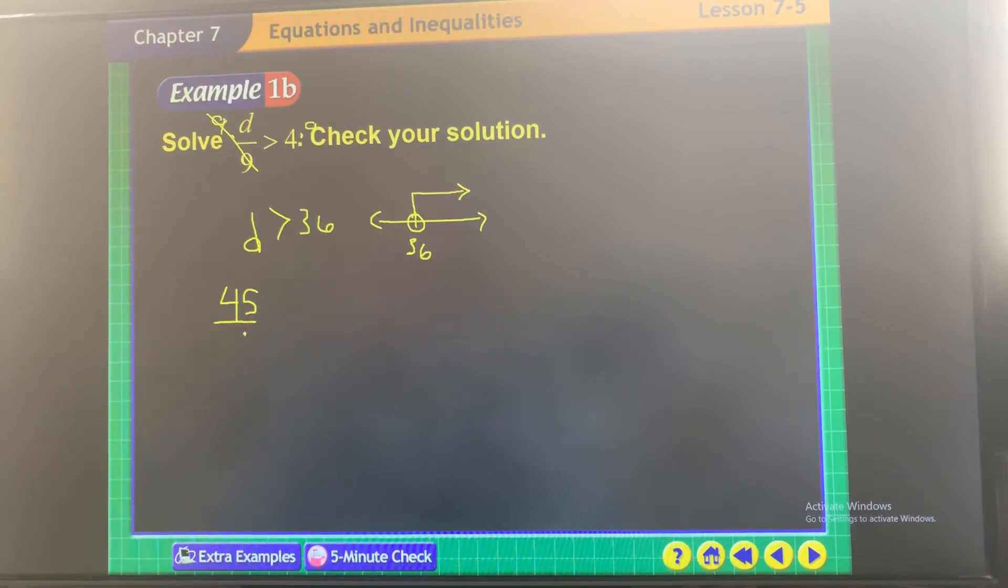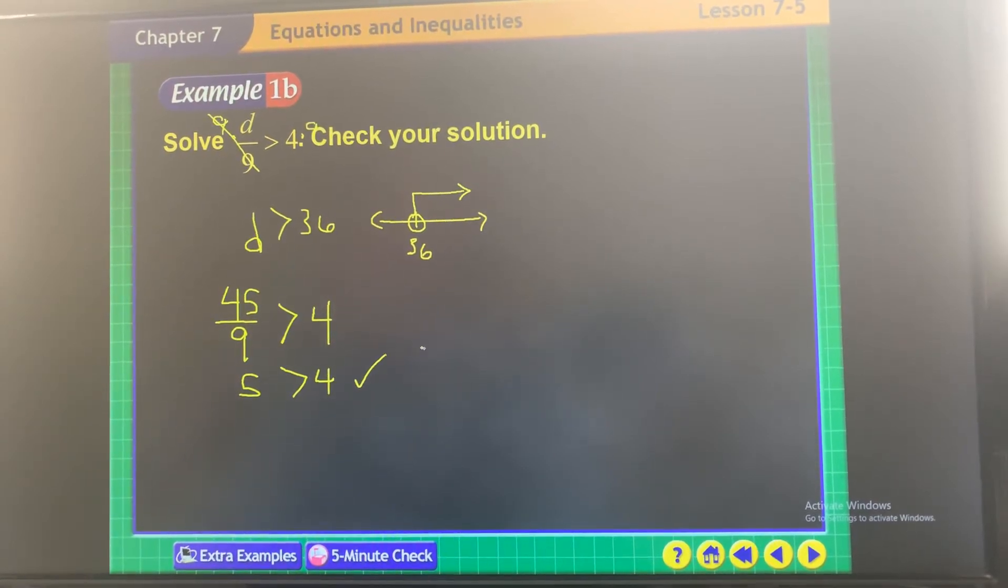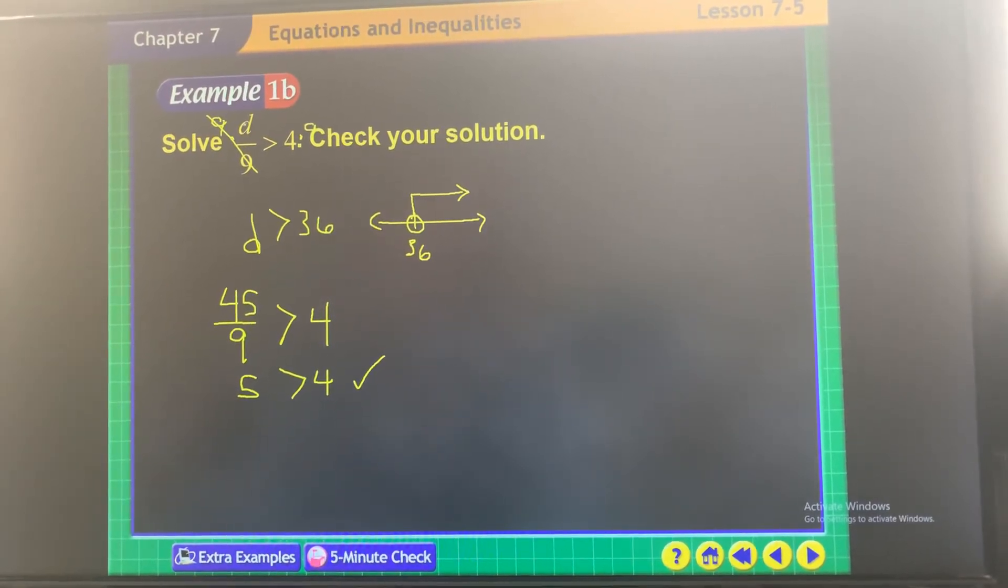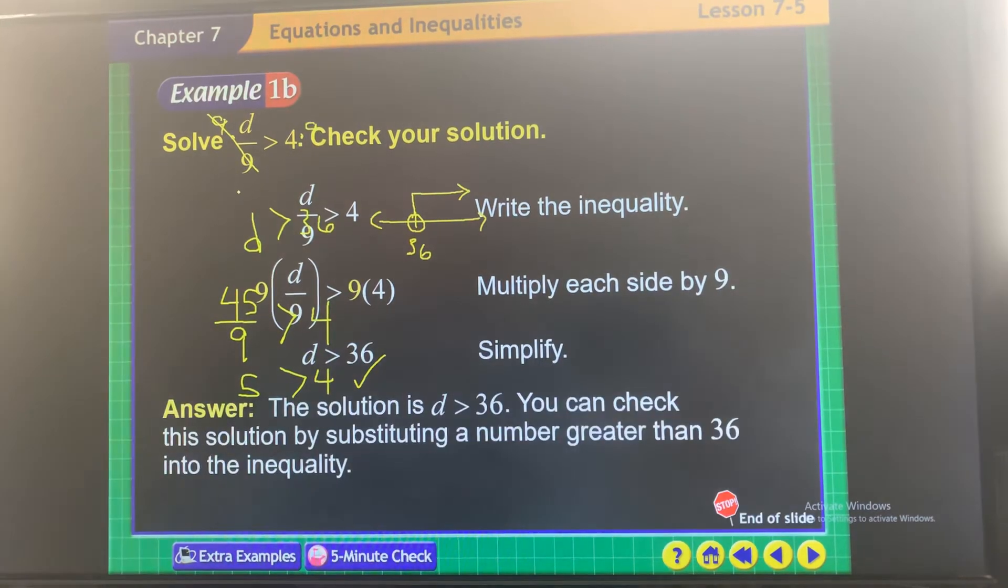45 divided by 9, is that greater than 4? Yeah, 5 is greater than 4, so it checks. Okay, so remember with division, when you go to check it, pick a number that works with the denominator, goes into it evenly.